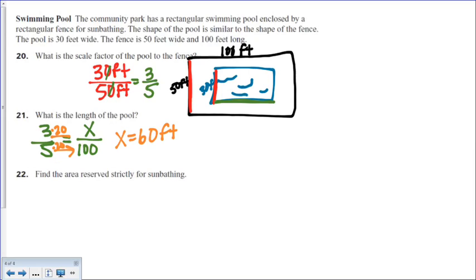All right, find the area reserved strictly for sunbathing. Now, I know this is kind of controversial because can't you sunbathe in the water? I mean, come on, if you really think about it. But let's go ahead and assume they don't mean you can sunbathe in the water. So we just found the length of the pool is 60. And when they talk about sunbathing, I guess they're talking about the deck of the pool, meaning everything I'm just highlighting right here, all this space, all this space right there.